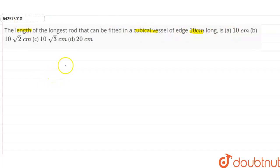The longest rod that can be fitted in the cubical vessel is its diagonal. In the question, side is given as 10 centimeter. The formula for calculating the diagonal of cube is...